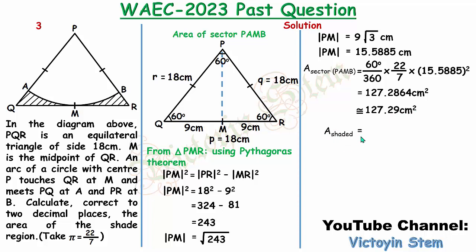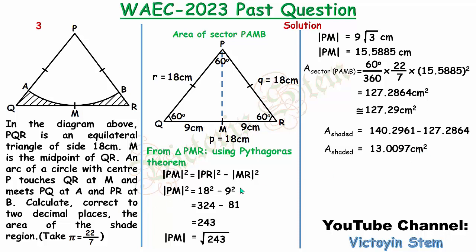For the area of the shaded portion: area of triangle minus area of sector = 140.2961 − 127.2864 = 13.0097 cm². To two decimal places, the third digit after the decimal is 9 — more than 5 — so I round up: the second decimal becomes 1, and every other digit turns to 0. The final answer is 13.01 cm².